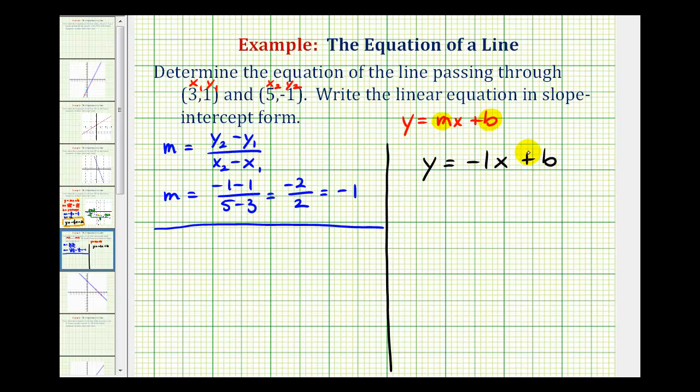So, let's determine the value of b by using this first point here with coordinates (3,1). So, we'll substitute three for x and one for y. So, we would have positive one must equal negative one times three plus b. And, since we have one unknown, we can now solve for b. We have one equals negative three plus b. So, we'll add three to both sides of the equation. So, we have b equals four, which is our y-intercept.